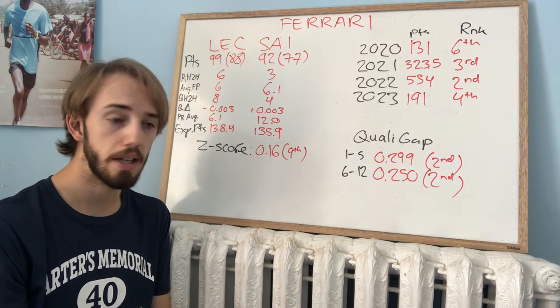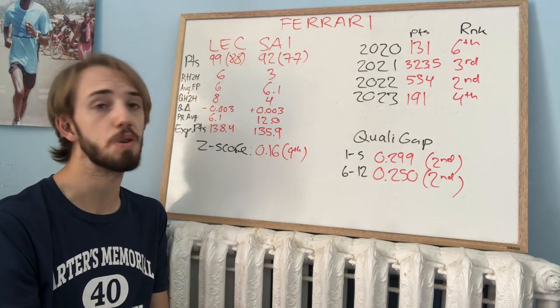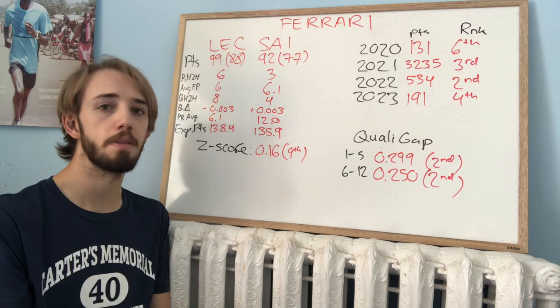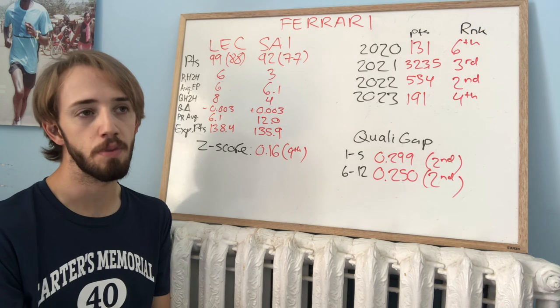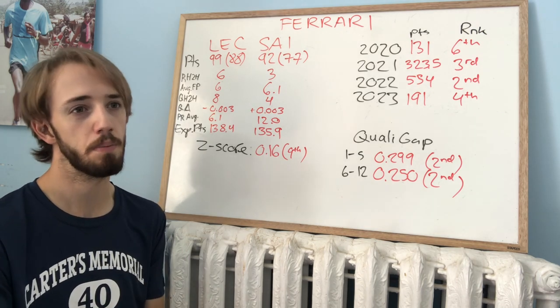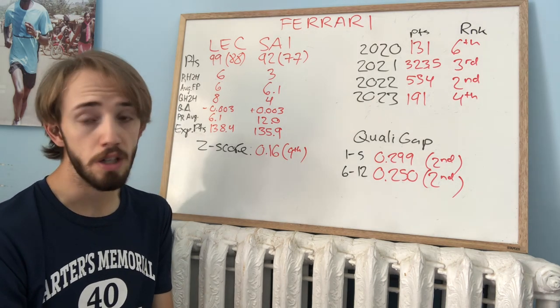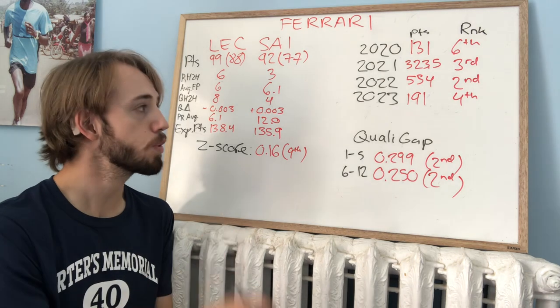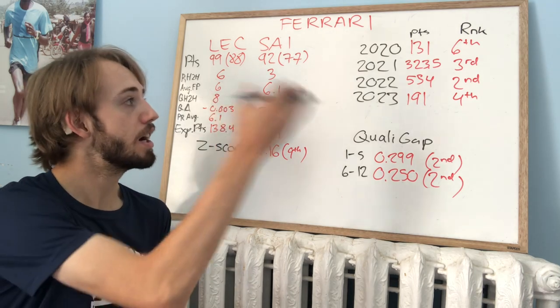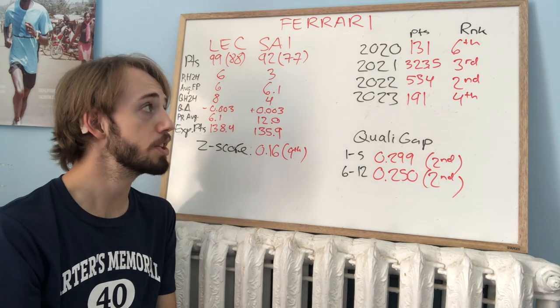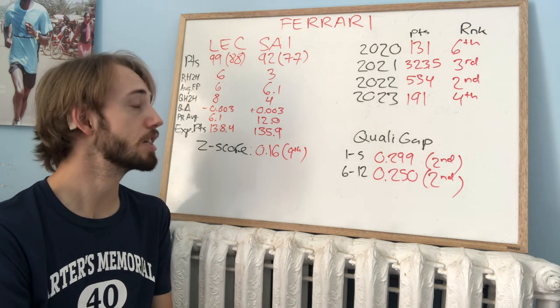Now looking at their recent history. 2020, of course, the year that no Ferrari fan wants to talk about. 131 points, which was 6th in the Constructors' Championship. Obviously, massive issues with engine power that year. After their engine from 2019 was effectively nerfed. And they had to basically almost rebuild an entire engine from scratch during COVID. But 2021, really nice recovery. 323.5 points. Of course, that half point from Spa will not be forgotten. And third in the Constructors' Championship. So massive jump up in points, of course, aided by the longer calendar. And a good jump up in the Constructors' Championship.